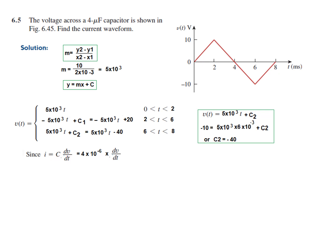Now we come to the calculation of current: I = C dV/dt. The value of C is 4 microfarads, so 4 × 10⁻⁶ × dV/dt. We differentiate all voltage expressions. Differentiation of 5 × 10³ × t gives 5 × 10³ (differentiation of t is 1). For the second segment, differentiation of −5 × 10³ × t gives −5 × 10³, and the constant differentiates to 0 — that is why it did not matter whether we calculated c₁ or not. Similarly the third segment differentiates to 5 × 10³.